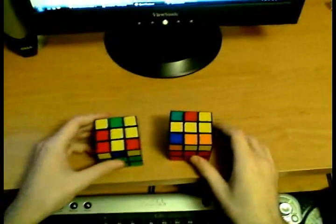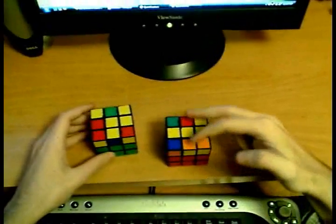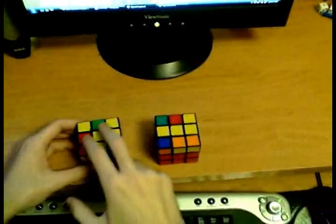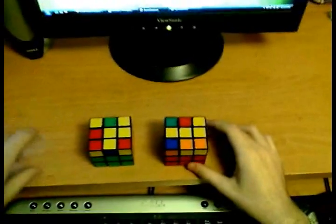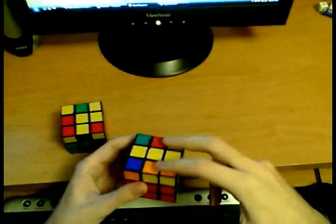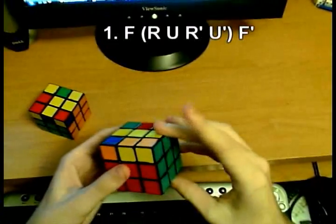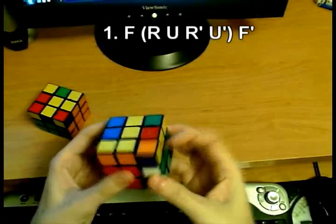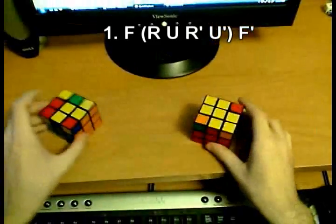If you have two edges correctly oriented, then we can have two sub-cases: either the two edges that need orienting are opposite to each other, or they are adjacent to each other like here. I will do the last case, where you have none of the edges oriented, after this. So if you have the two edges that need orienting opposite each other, hold the cube like so and do the following algorithm: F R U R' U' F'.